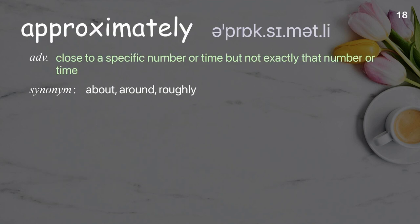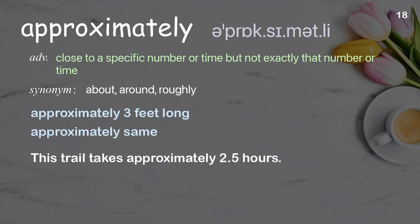Approximately: Close to a specific number or time, but not exactly that number or time. Examples: Approximately 3 feet long. Approximately same. This trail takes approximately 2.5 hours.